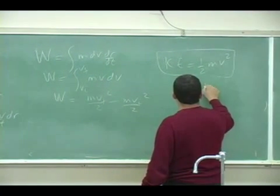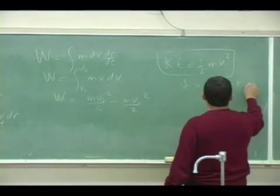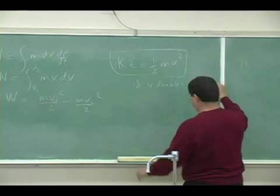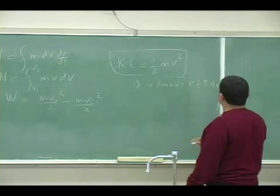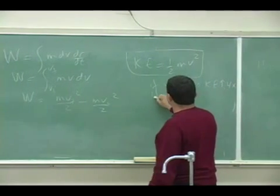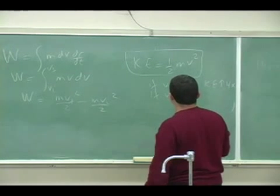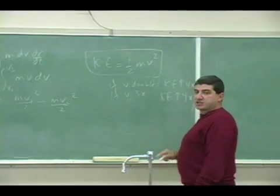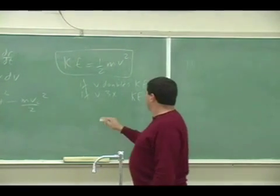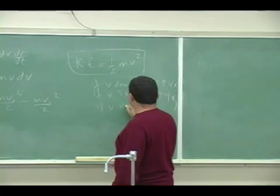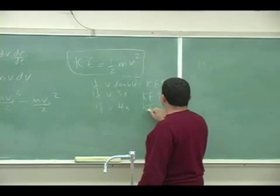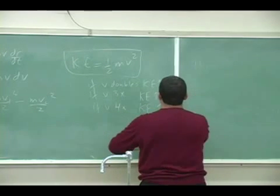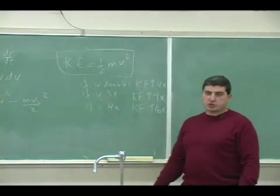So if you double the velocity of an object, if v doubles, kinetic energy quadruples. It goes up by a factor of four. If v triples, then the kinetic energy goes up by a factor of nine. If v quadruples, kinetic energy goes up by a factor of 16.